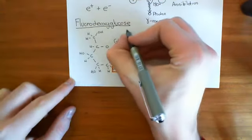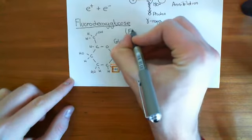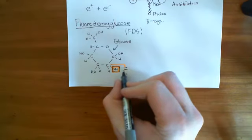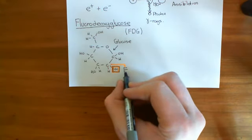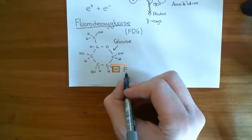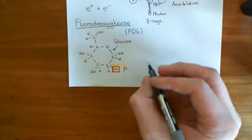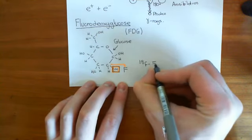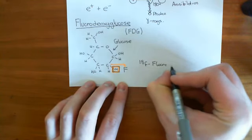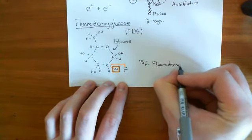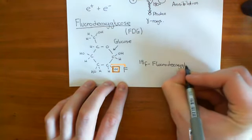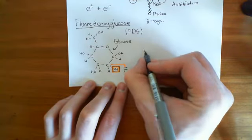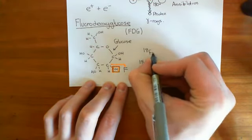Fluorodeoxyglucose is often abbreviated to FDG. Now we can put in our radioactive isotope of fluorine — rather than fluorine-19, we put in fluorine-18. What we create is 18F-fluorodeoxyglucose. So we have labelled our fluorodeoxyglucose with our radioisotope of fluorine, which can also be denoted 18F-FDG.